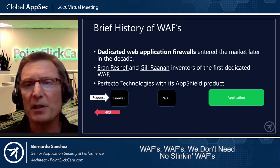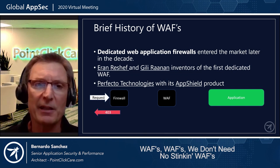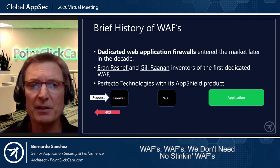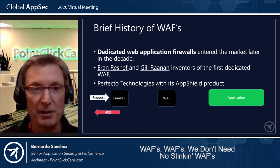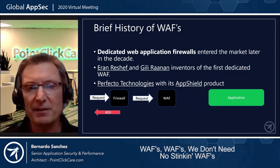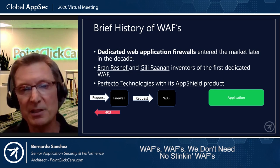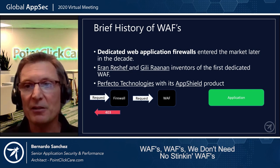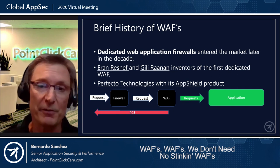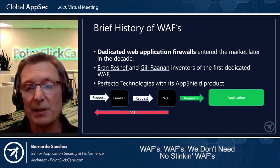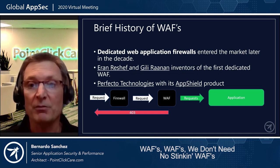Dedicated web application firewalls entered the market later in the decade. Aaron Reshev and Gilly Ranum were the inventors of the first dedicated WAF, the AppShield. We see the firewall taking a request and rejecting or forbidding if it doesn't pass its rules. Now there's a separate entity called a web application firewall. The request gets proxied to that, it inspects all data coming in, returns a 403 if there's an error, or sends the request to the now-secured application.